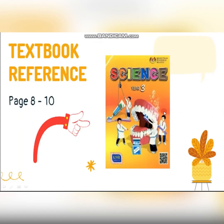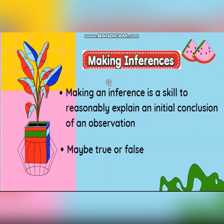Before that, let's take your science textbook. In this textbook, you are going to see pages eight until ten. Are you ready? Now let's start. Making an inference is a skill to reasonably explain an initial conclusion of an observation.